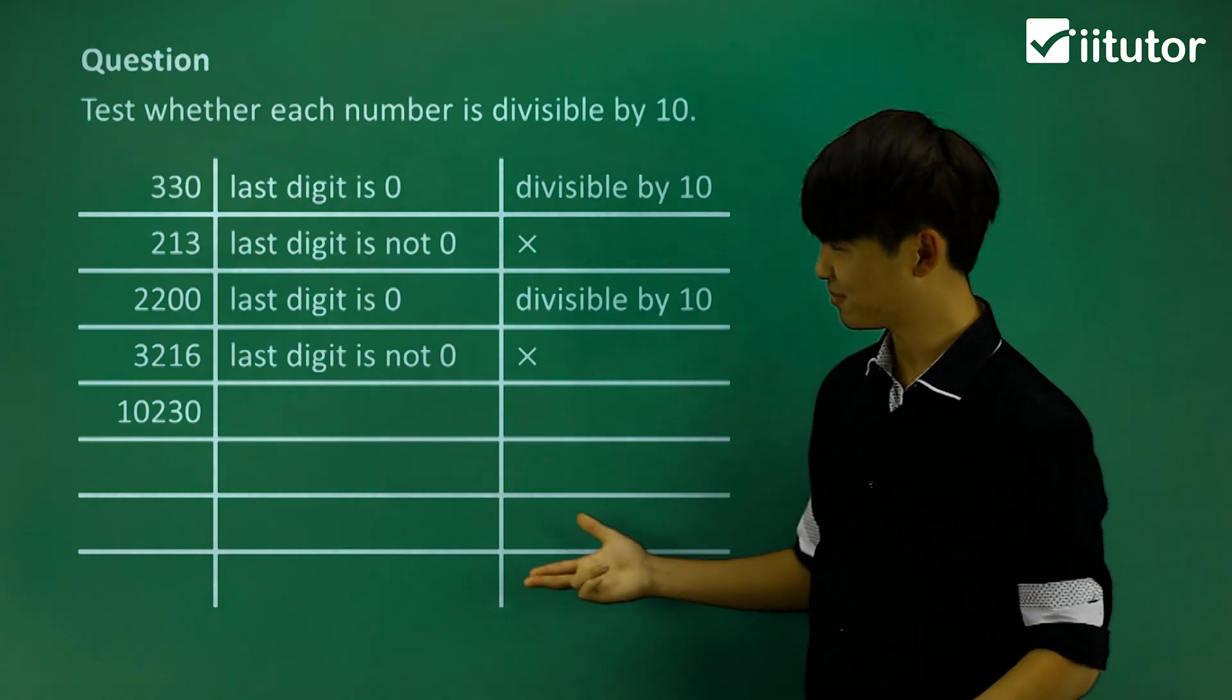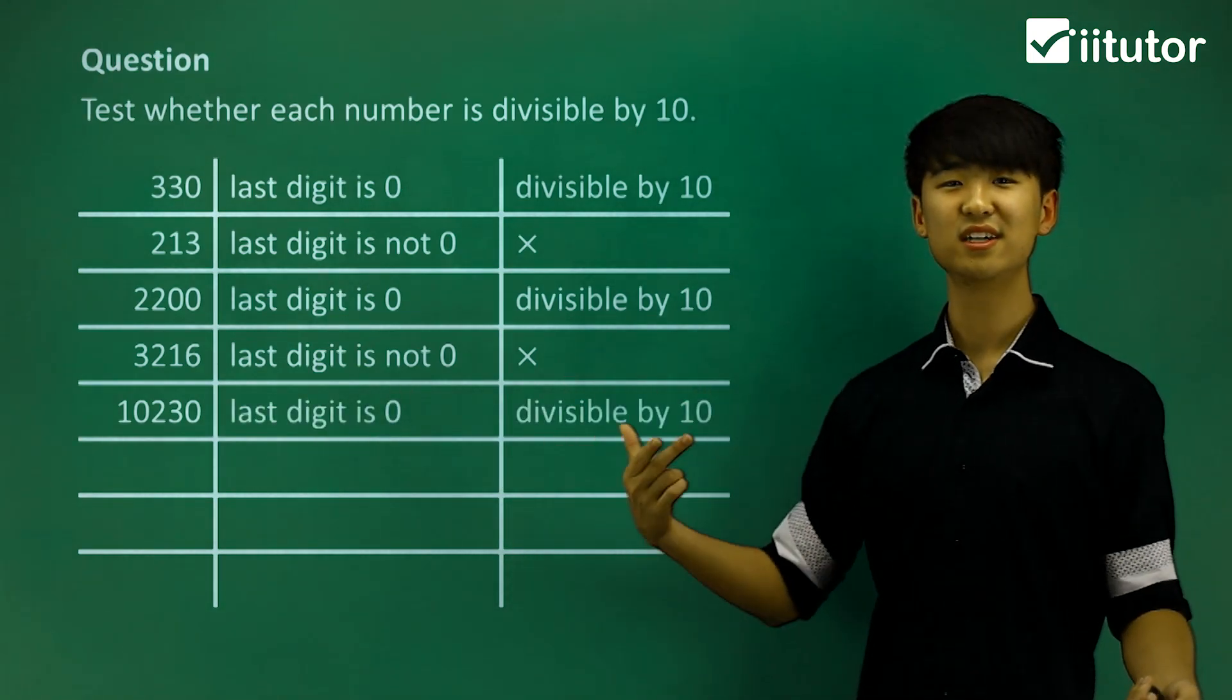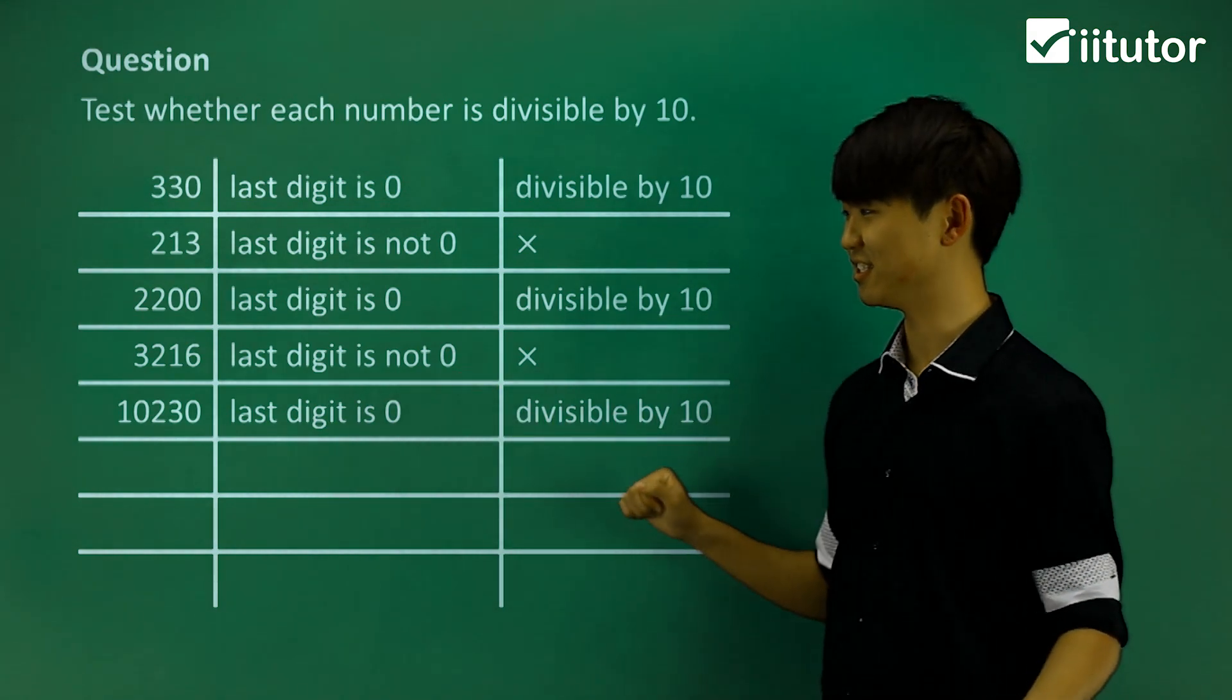The last digit in this number is 0, so then this one is divisible by 10, then the whole number is divisible by 10.